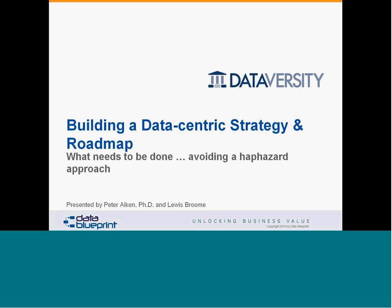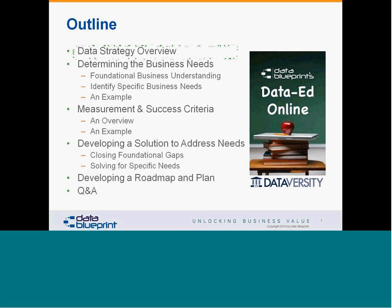We'll go ahead and kick off and go over the outline. The first section is the data strategy overview — the why, what, and how of a data strategy, with an emphasis on the why. The next section, determining the business needs, is really getting on the same page with your business partners, getting a foundational understanding of the business model, and then looking at specific business opportunities. The third section covers measurement and success criteria in business terms — a critically challenging and somewhat elusive activity. Once we understand business needs and measurements of success, we'll talk about developing the data strategy solution. Finally, we'll give a short introduction on developing a roadmap and a plan.